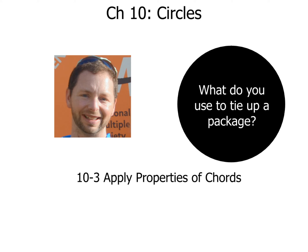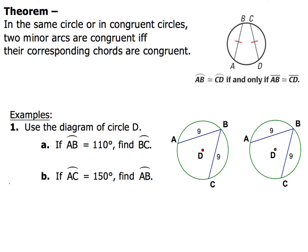Let's first take a look at some theorems. This theorem says that in the same circle or in congruent circles, two minor arcs are congruent if and only if their corresponding chords are congruent. So if that happens, then those two arcs are the same.